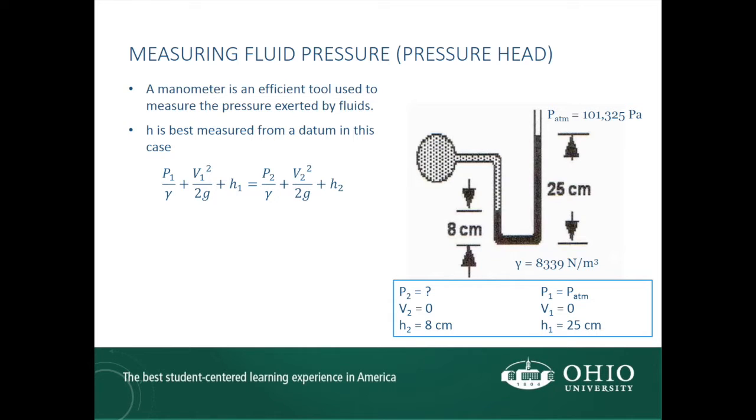At point 1, the pressure is equal to the atmospheric pressure because the tube end is open to the air. Atmospheric pressure is 101,325 Pa. The velocity at point 1 is also zero, and the elevation is 25 cm. Knowing these values, we can rewrite Bernoulli's equation with the known values.